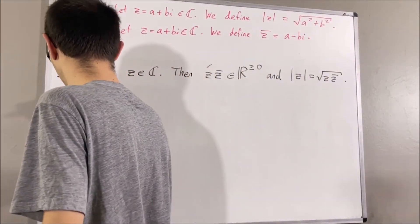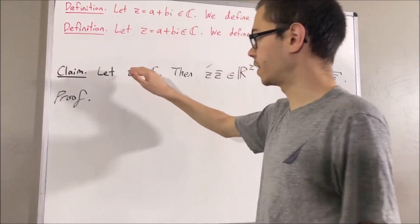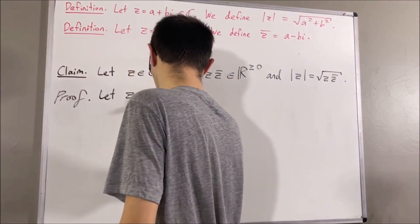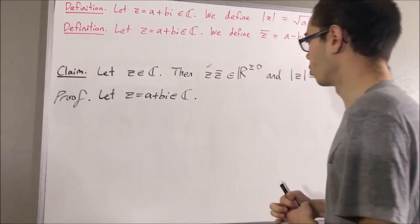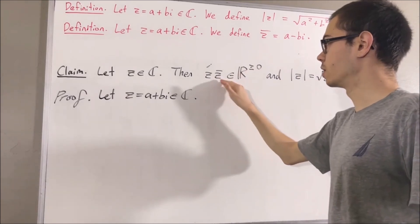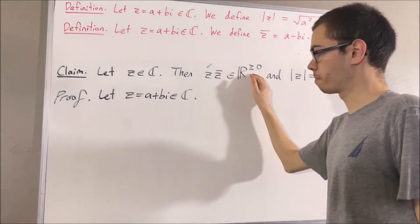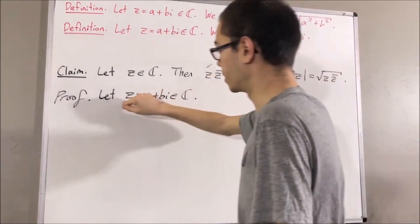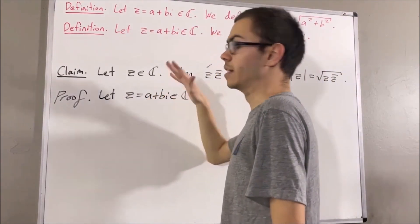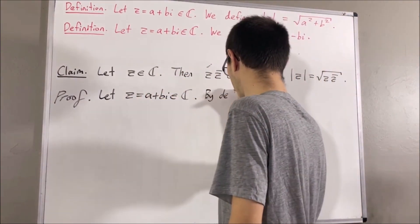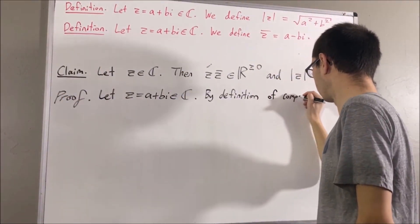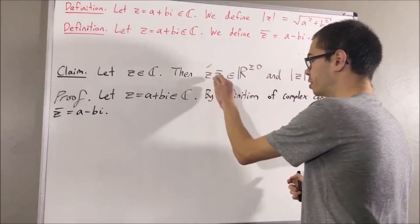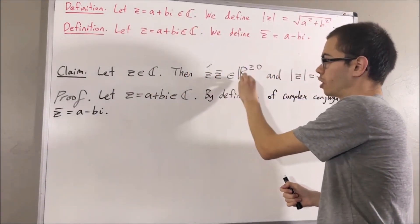Let's prove this. We say the complex number z equals a plus bi. We're first going to show that z times z bar is an element of the non-negative real numbers. By definition of the complex conjugate, since z equals a plus bi, z bar is equal to a minus bi. Now let's compute z times z bar and show that it's a non-negative real number.